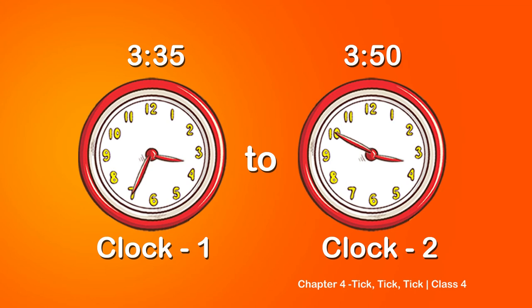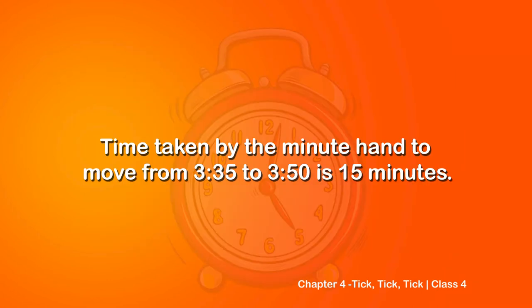The duration from 3:35 to 3:50 - some of you have got the answer already, very good! You can see that the minute hand has moved from 7 to 8, then 9, and finally reached 10 - that is three main divisions, which means totally it has moved 15 small lines, which means 15 minutes. So the time taken by the minute hand to move from 3:35 to 3:50 is 15 minutes.